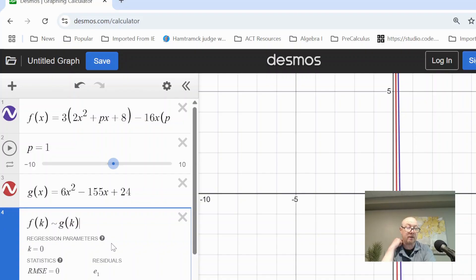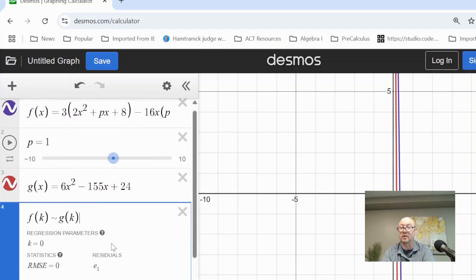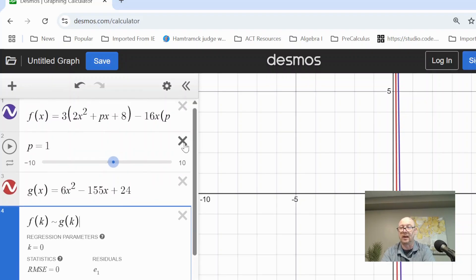At this point, it's not really giving us the information that we need, but simply all we have to do now is remove the slider for p.